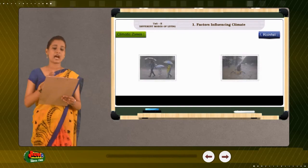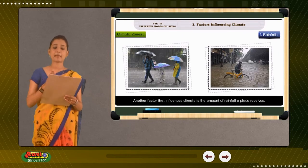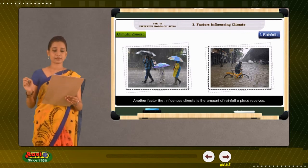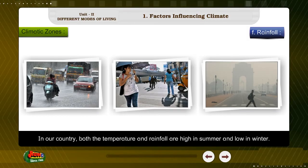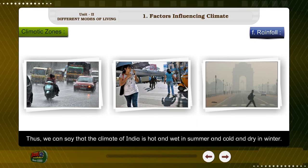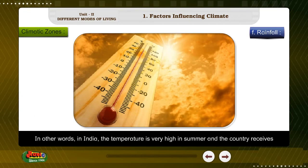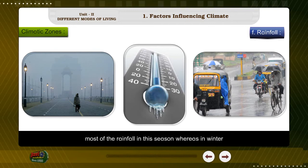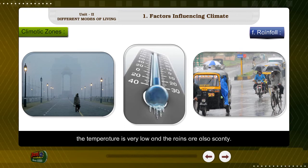Factor F: Rainfall. Another factor that influences climate is the amount of rainfall a place receives. In our country, both the temperature and rainfall are high in summer and low in winter. Thus, we can say that the climate of India is hot and wet in summer and cold and dry in winter. In other words, in India, the temperature is very high in summer and the country receives most of its rainfall in this season, whereas in winter the temperature is very low and the rains are also scanty.